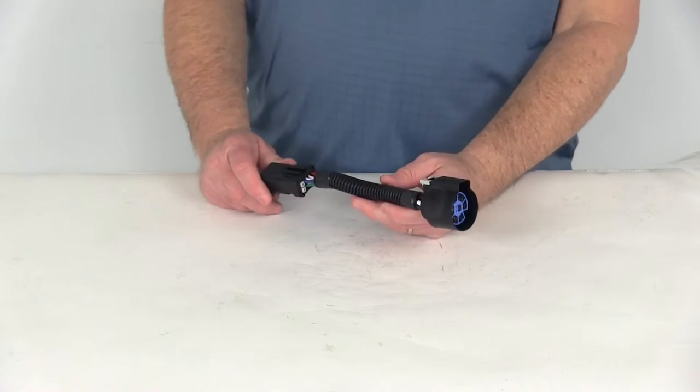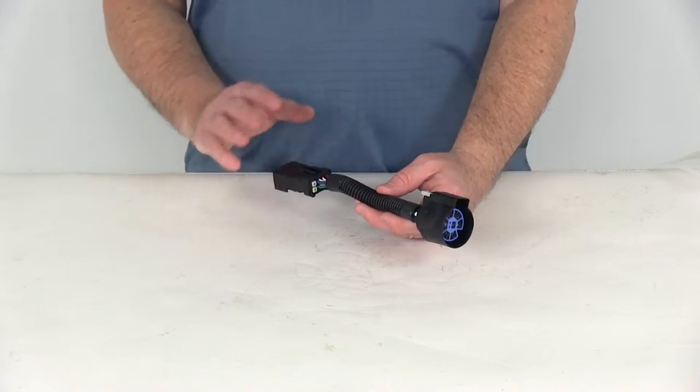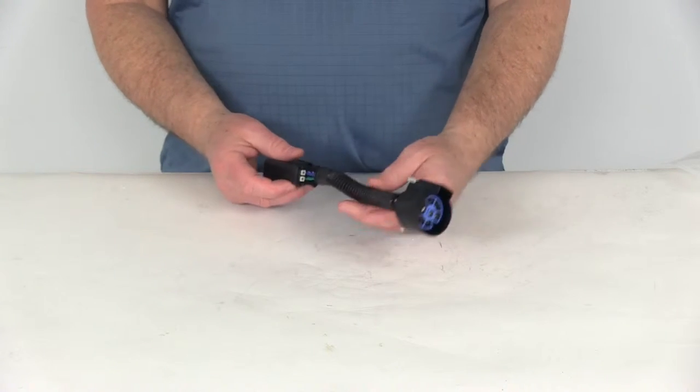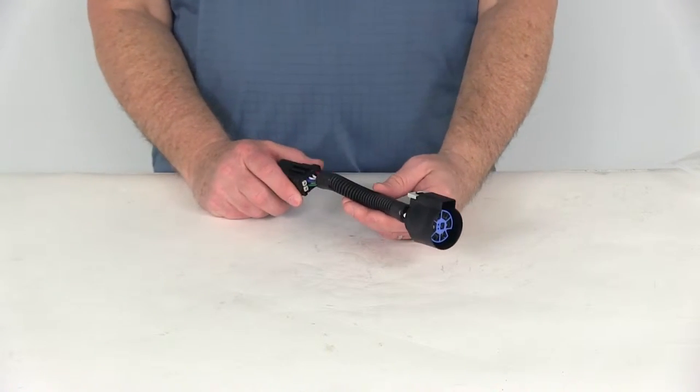Today we're going to review part number PK-11933. This is the Pollock Rectangular to Round Harness Adapter for the Chrysler Dodge OEM Plug.